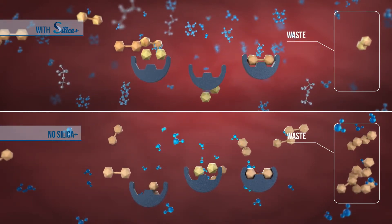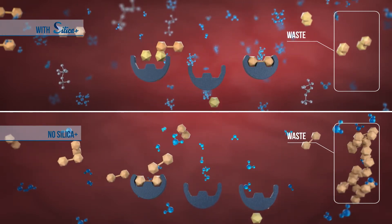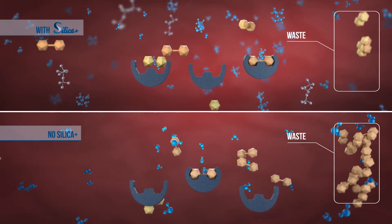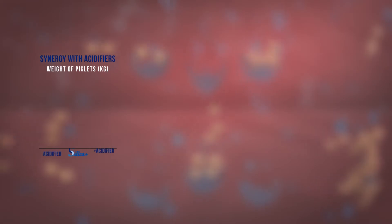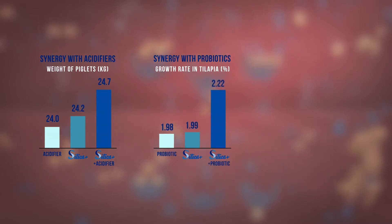Any biochemical reaction happening in the gut is due to an exchange of electrons through water. This is true for digestion, absorption and assimilation of nutrients. This is why by speeding up ionic exchanges, Silica Plus improves the efficiency of not only nutrient absorption, but also acidifier action, pre- and probiotic effect, as well as antibiotic efficiency.